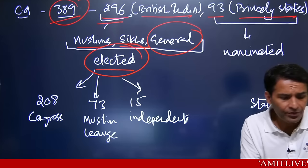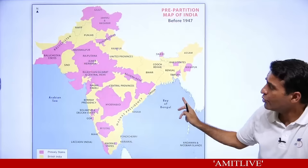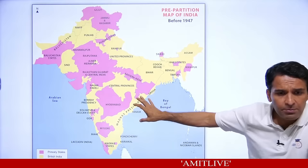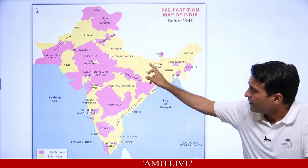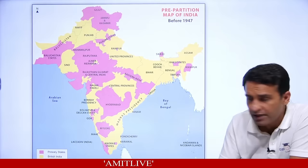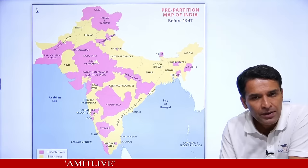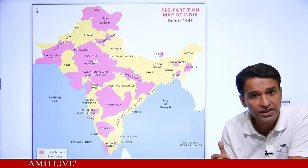Before understanding this, look at the map. In 1947, India had two kinds of areas: the yellow color areas were ruled directly by the Britishers, called provinces; the pink color areas were called princely states, where the sovereignty was British but they were autonomous kingdoms. For example, Hyderabad was ruled independently by the Nizam, but foreign relations, defense, and communication were managed by the Britishers.